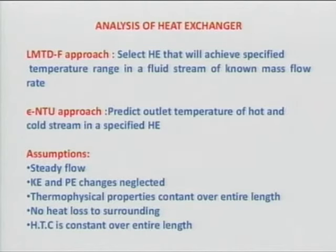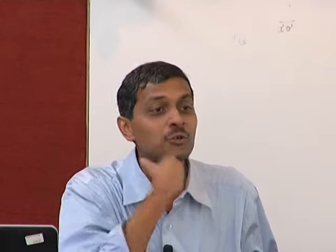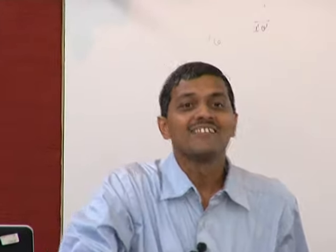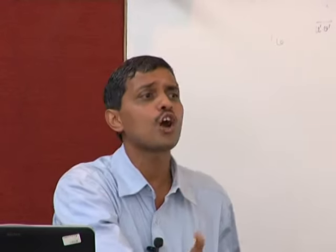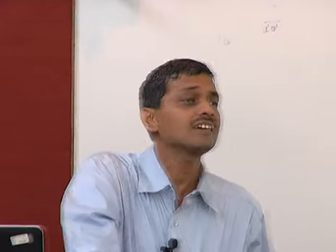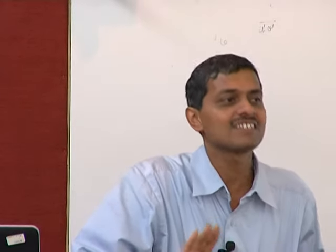For varying properties, in the correlations there is a term (μ_b/μ_wall)^n that accounts for property variation. Thermophysical properties being constant is an assumption — perhaps not unreasonable for a plate-fin exchanger with air as the fluid. No heat loss to the surroundings: there is bound to be heat loss; the exchanger is not outside the world. Heat transfer coefficient constant over the length: this is not such a serious assumption because heat exchangers are quite lengthy.